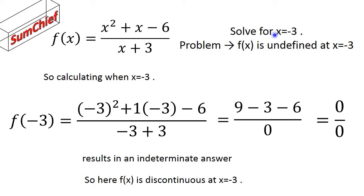As you can see, we're going to solve for x equals minus 3. Calculating when x equals minus 3, we're plugging in the minus 3 value: minus 3 squared plus 1 times minus 3 minus 6 divided by minus 3 plus 3. That gives us 9 minus 3 minus 6 divided by 0, which is 0 over 0.